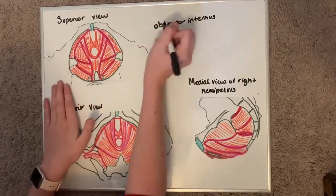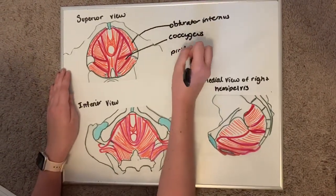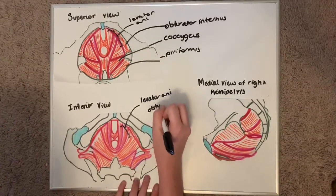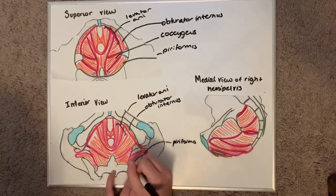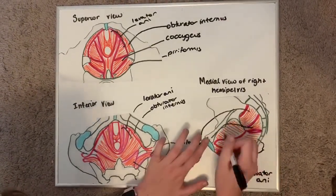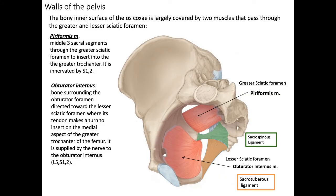Now let's do a quick overview of the musculature of the pelvis. The main muscles include the obturator internus, piriformis, coccygeus, and the levator ani muscles. The levator ani muscles are made up of three muscles: the iliococcygeus, pubococcygeus, and puborectalis. The inner surface of the os coxa is covered by the piriformis and obturator internus, which pass through the greater and lesser sciatic foramen. The piriformis attaches from the middle sacral segments to the greater trochanter, is innervated by S1 and S2, and travels through the greater sciatic foramen. The obturator internus attaches from the obturator membrane to the greater trochanter, travels through the lesser sciatic foramen, and is innervated by L5, S1, and S2.